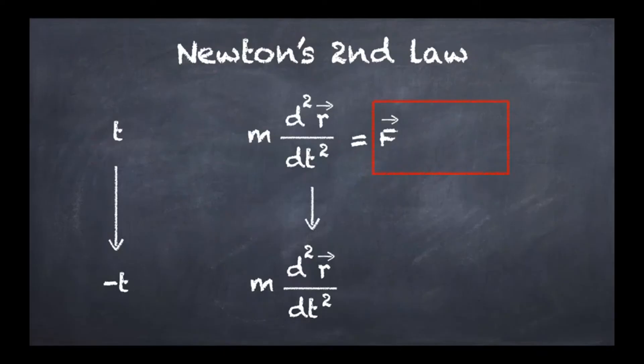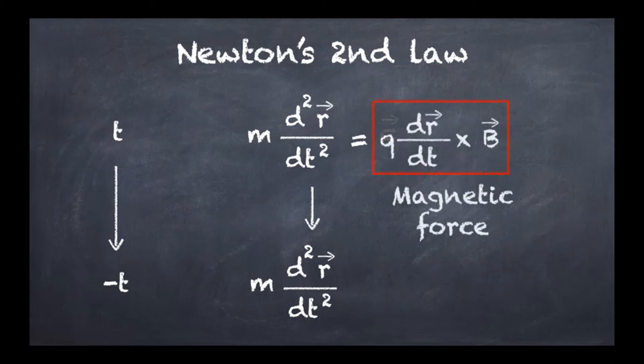What we have seen is that if we look at Newton's second law — one of the most fundamental laws of classical mechanics — we end up with some forces for which it is time reversible, and some forces for which it is not. Now I would like to look at one final, quite specific case: the magnetic force.